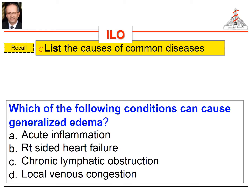If your learning outcome is targeting simple recall, such as listing the causes of common diseases, your question could be: 'Which of the following conditions can cause generalized edema?' The choices would be acute inflammation, right-sided heart failure, chronic lymphatic obstruction, and local venous congestion. The correct answer is right-sided heart failure.